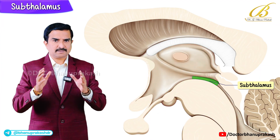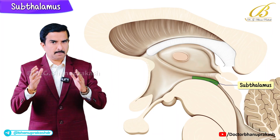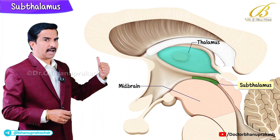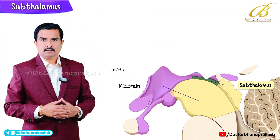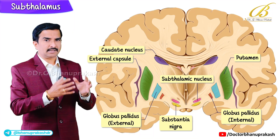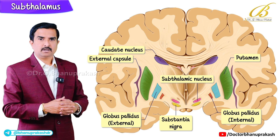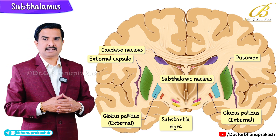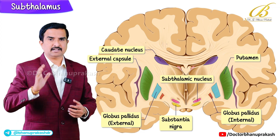So what is the subthalamus? The subthalamus lies just below the thalamus, located between the thalamus and the midbrain. It is technically part of the diencephalon, but functionally it is closely connected with the basal ganglia — the deep nuclei involved in movement coordination and control. The main structure that makes up the subthalamus is the subthalamic nucleus, and this is what we will focus on in this topic.